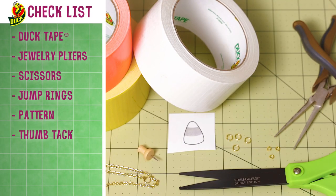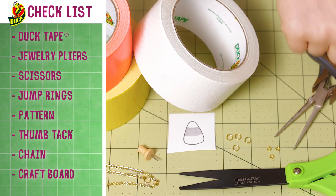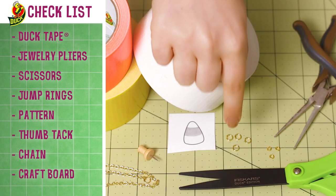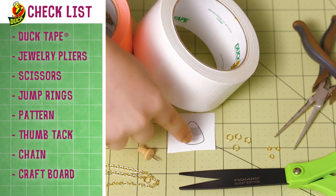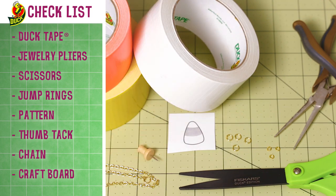To make this project, you'll need white, orange, and yellow duct tape, jewelry pliers, scissors, small and large jump rings, a candy corn pattern, a thumbtack, a jewelry chain, and a crafting board.